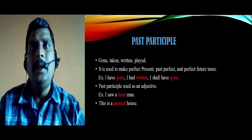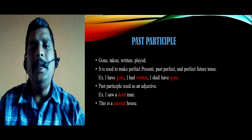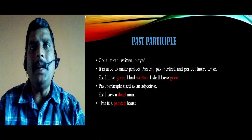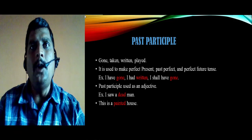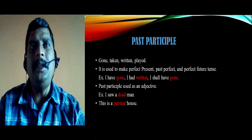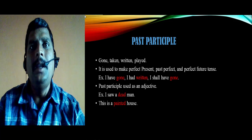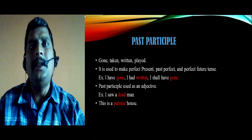The second type is the past participle. Examples of past participles: 'gone', 'taken', 'written', 'played'. Past participles are used to make perfect continuous, perfect past, and perfect future tenses. For example: 'I have gone', 'I had returned', 'I shall have gone.' The second use of the past participle is as an adjective. For example: 'I saw a dead man', 'This is a painted house' — in these examples, 'dead' and 'painted' act as adjectives. So the past participle can be used as an adjective.